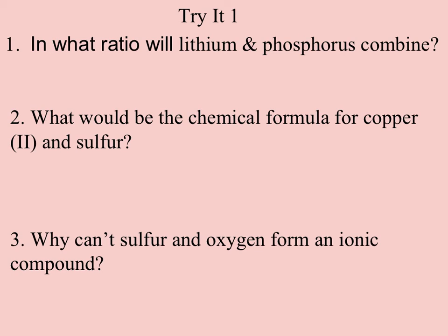If I look up lithium, I see lithium is in family 1A, so lithium has one electron to give. If I find phosphorus, phosphorus has three electrons it needs to gain. So one lithium only takes care of one of these, so I'm going to need to bring in a second and a third lithium to satisfy this phosphorus. So it will be Li3P, or we could say it's a three-to-one ratio.